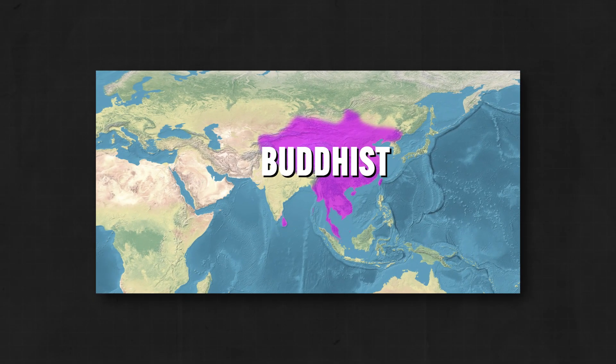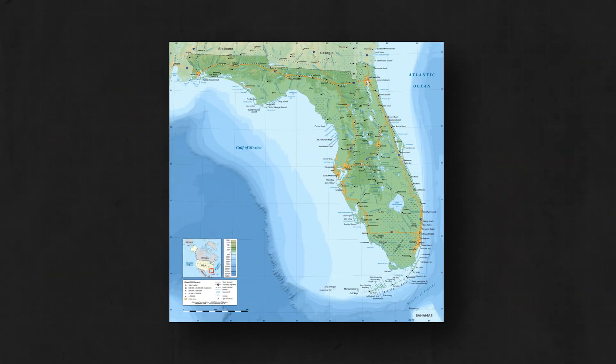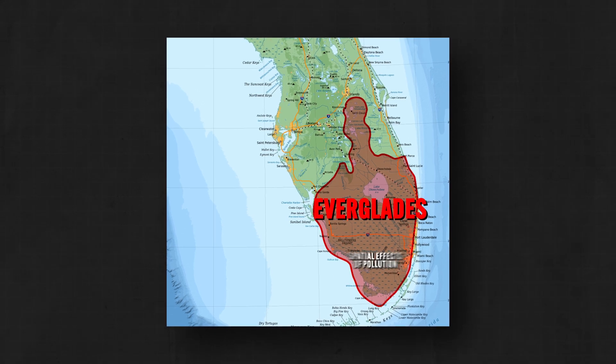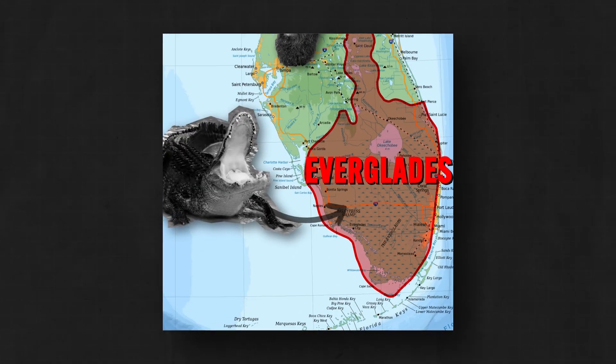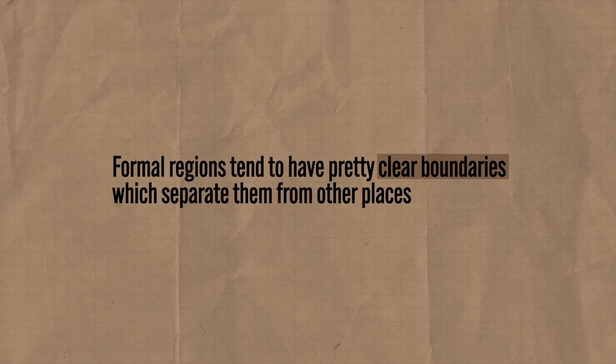For example, geographers could define a formal region based on people who are Buddhists, which would include East Asia and Southeast Asia. Or a geographical feature could provide the basis for defining a region like the Everglades in Florida. Often geographers use more than one cultural trait to define a region, like the overlap of language and religion and economics. The point is formal regions tend to have pretty clear boundaries which separate them from other places.